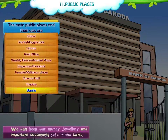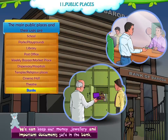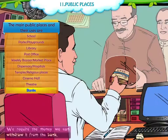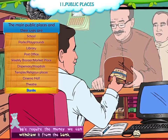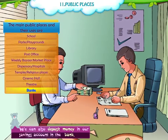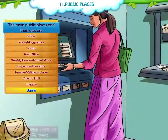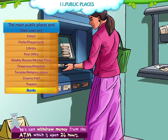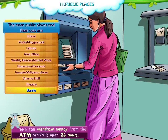Banks. We can keep our money, jewellery and important documents safe in the bank. Whenever we require money, we can withdraw it from the bank. We can also deposit money in our savings account in the bank. We can withdraw money from the ATM, which is open 24 hours.